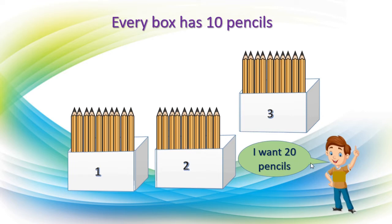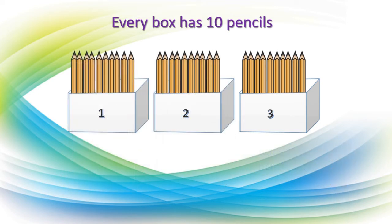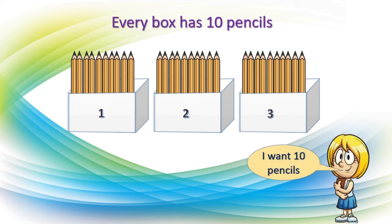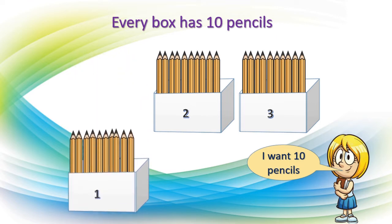He got 20 pencils — mission accomplished! Now again with the three boxes: this second child, a girl, needs 10 pencils from these boxes. Each box has 10 pencils, so this is very easy. If we give her one box, we give her 10 pencils. She is happy now.